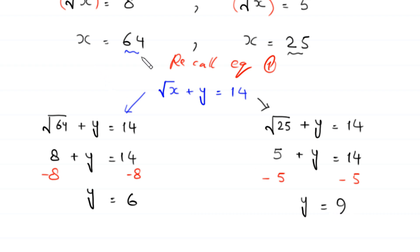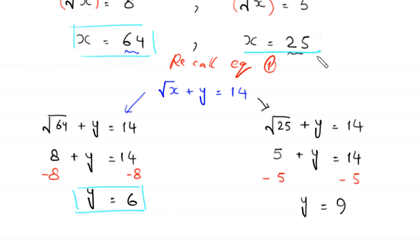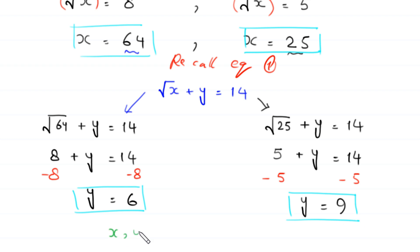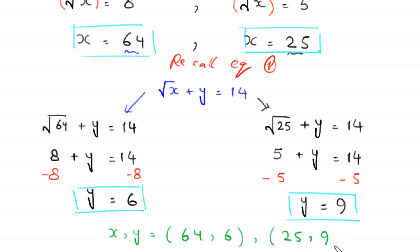So when x equals 64, y equals 6; and when x equals 25, y equals 9. This gives us two candidate pairs of solutions: x comma y equals 64 comma 6, and x comma y equals 25 comma 9.